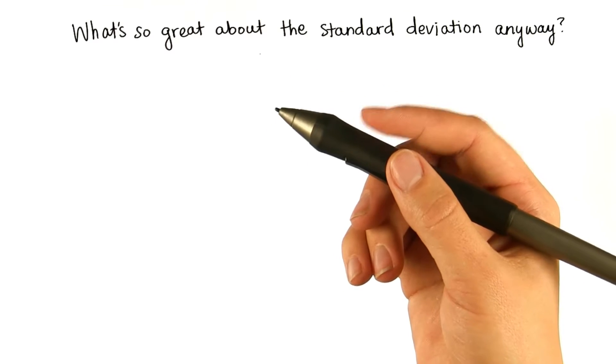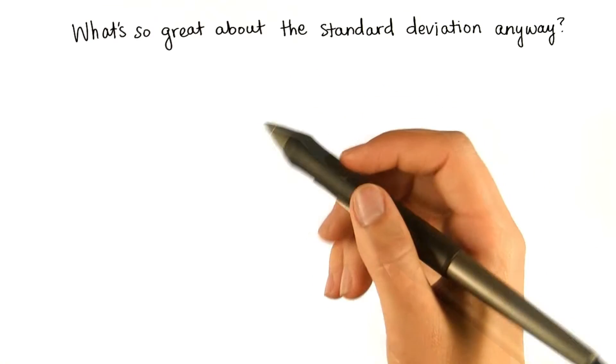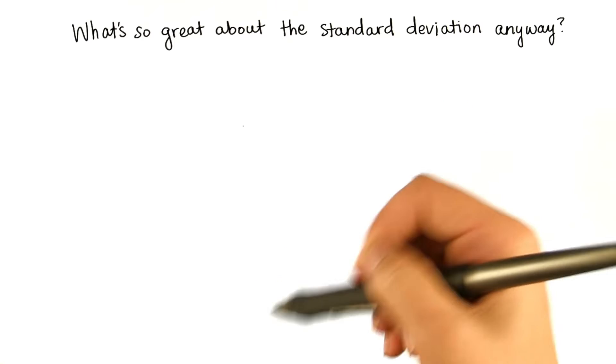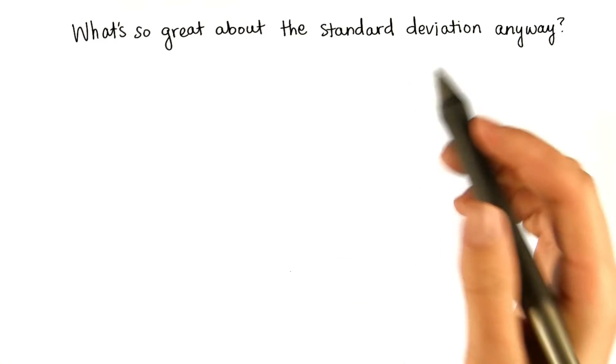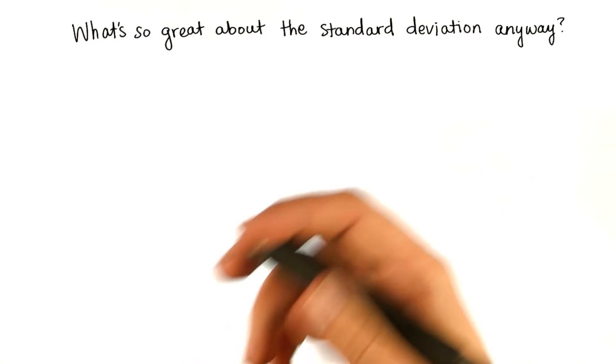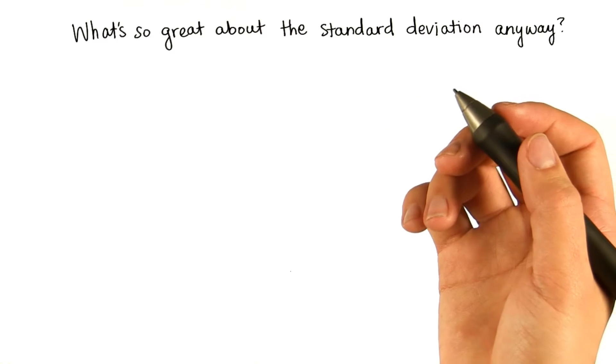Why don't we just find the average absolute deviation? Why do we have to square each deviation, find the average square, and then take the square root? Doesn't it seem like a lot of extra complicated steps?